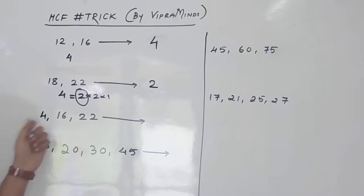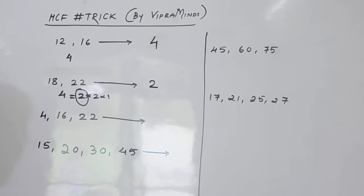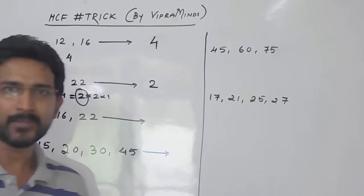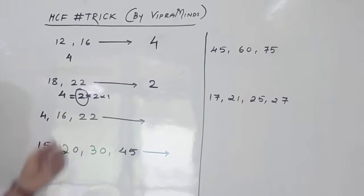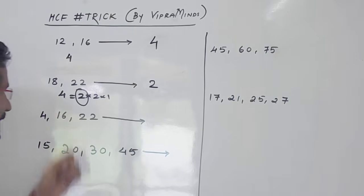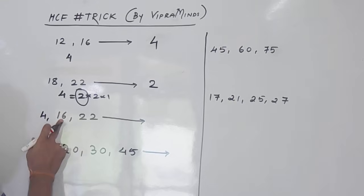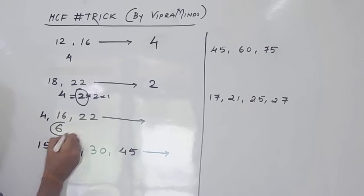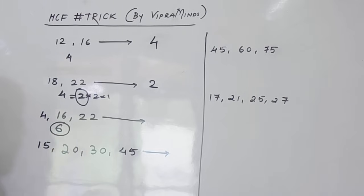Now we'll see the next one: 4, 16 and 22. Now we have 3 numbers. When you have more than two numbers, you have to take the least difference. The difference between 4 and 16 is 12, between 16 and 22 is 6, and between 4 and 22 is 18. So the least difference is between 16 and 22, that is 6.